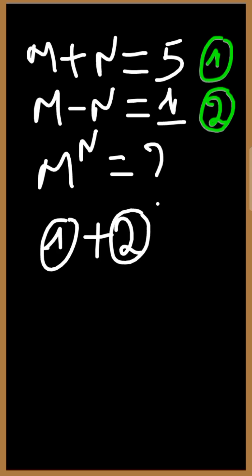If we add the two equations, M plus M will give us 2M. N plus negative N will give us 0, is equal to 5 plus 1, which gives us 6.